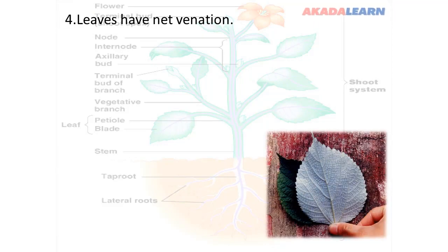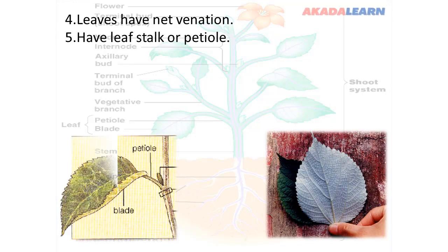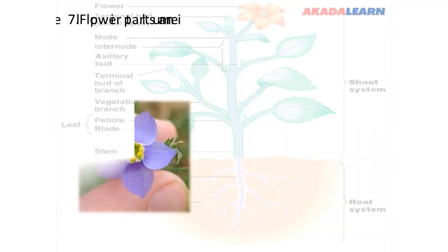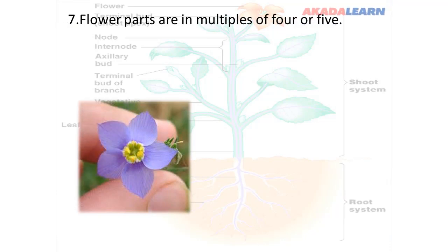The leaves of dicotyledons have net venation, unlike monocots which have parallel venation. They have a leaf stalk — also known as a petiole — which monocots do not have. They possess a main stem with several branches, unlike monocots which have one single erect stem without branches. Flower parts are a multiple of four or five, unlike monocots where flower parts are only a multiple of three.